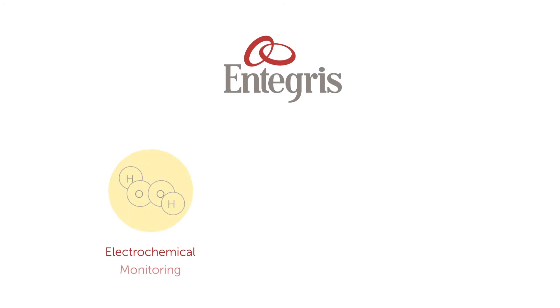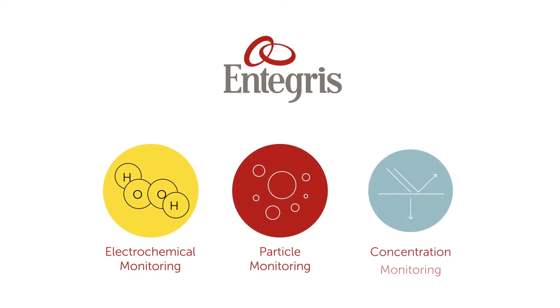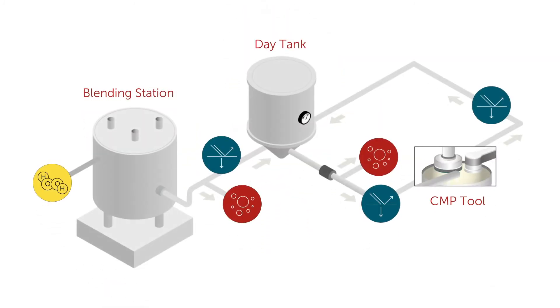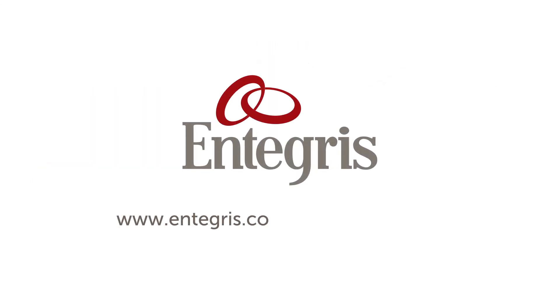With help from complementary Integris technologies, FABs can continuously monitor CMP slurry from blending through point of use and greatly reduce yield loss and achieve CMP mastery. Learn more at integris.com/cmpmonitoring.